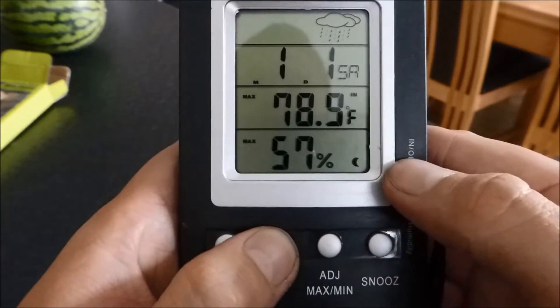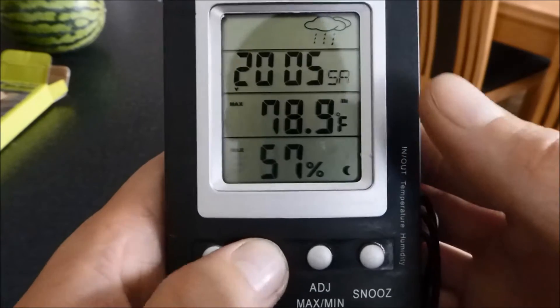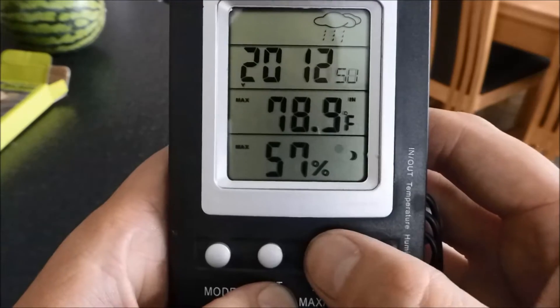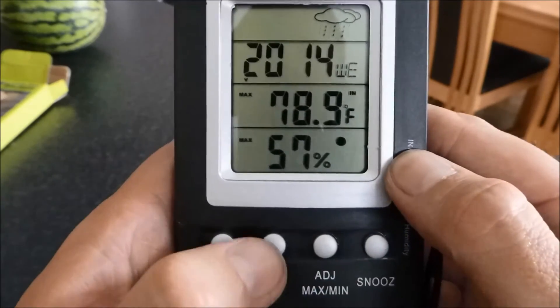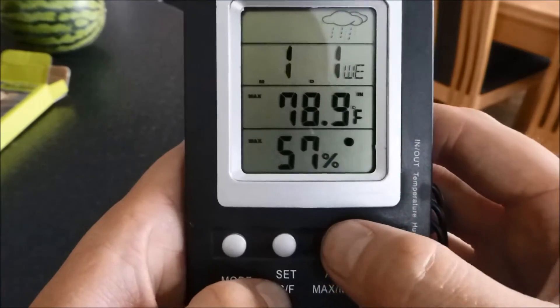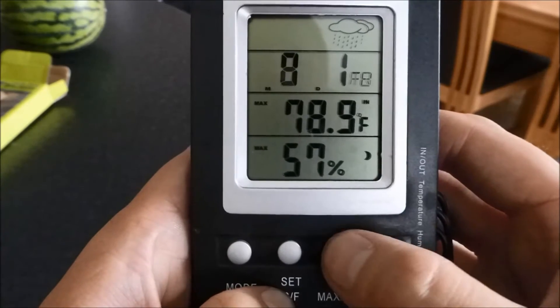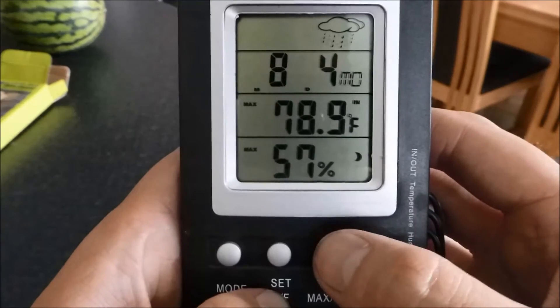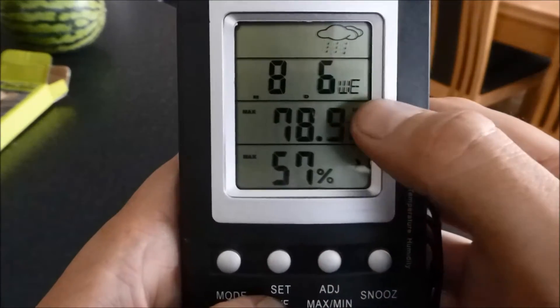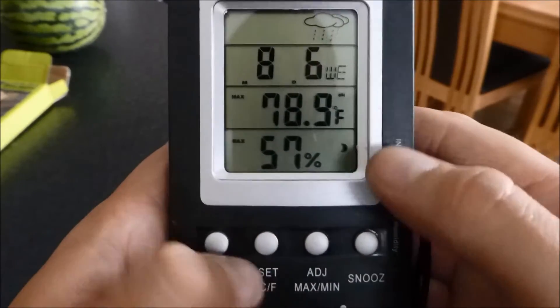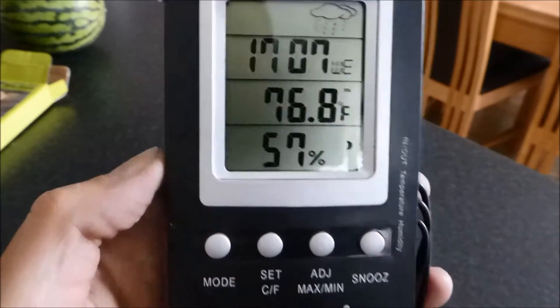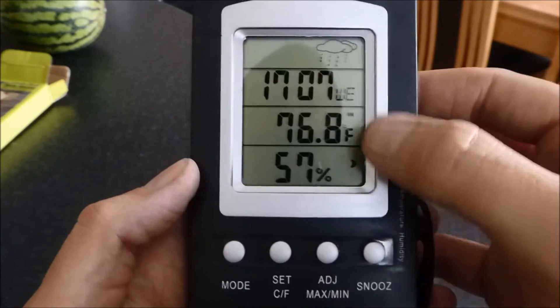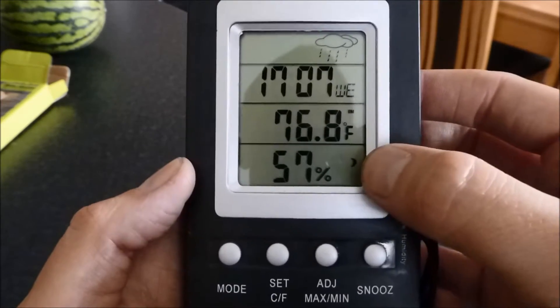I do not want an alarm. I will leave that at 0. To change the date, keep hold of set. Now it actually asks you to change the year first. You press the adjust button, 2014. Set. The month is August, so it's 8. Set. And the date is the 6, which is Wednesday. Set. Okay, so this is the main screen now. So I've set the time. That is 7 minutes past 5, and those are the temperatures and humidities in my kitchen.